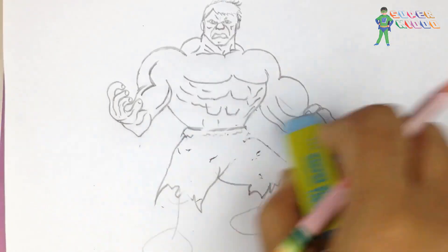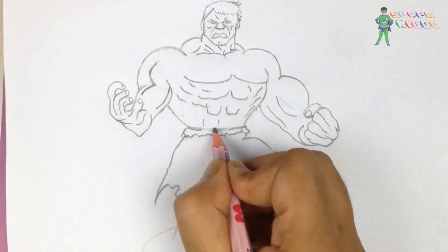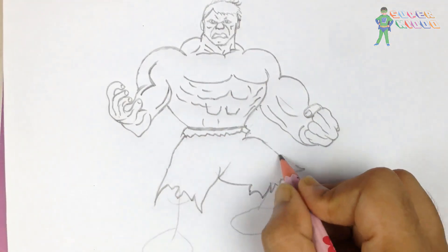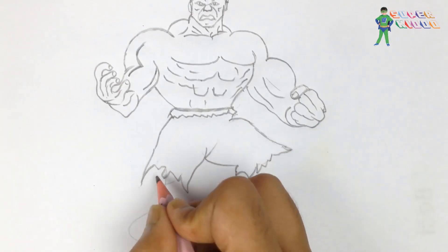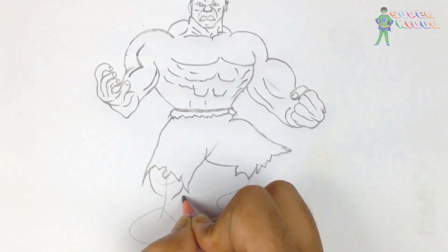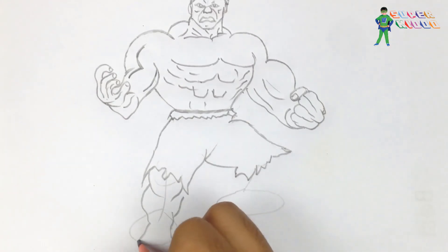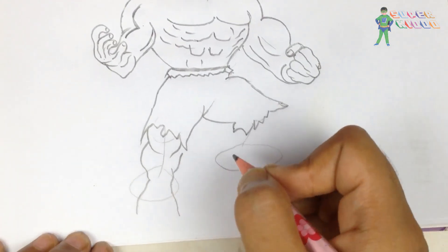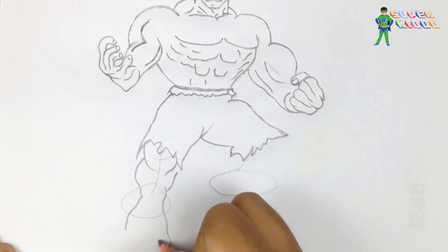Here his torn pant and just cleaning those unwanted lines that I made for sketch and now his legs. His leg muscles are also strong as his hand.